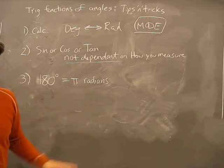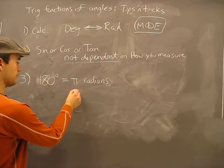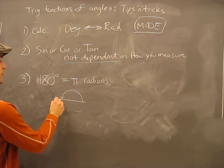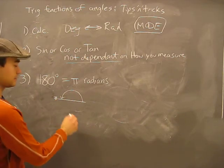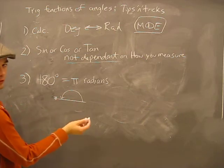180 degrees equals π radians. Okay, what that means is that if you go around the circle to 180 degrees, you've gone π radians distance, and not π distance, that's π radians, that 3.14 radians.